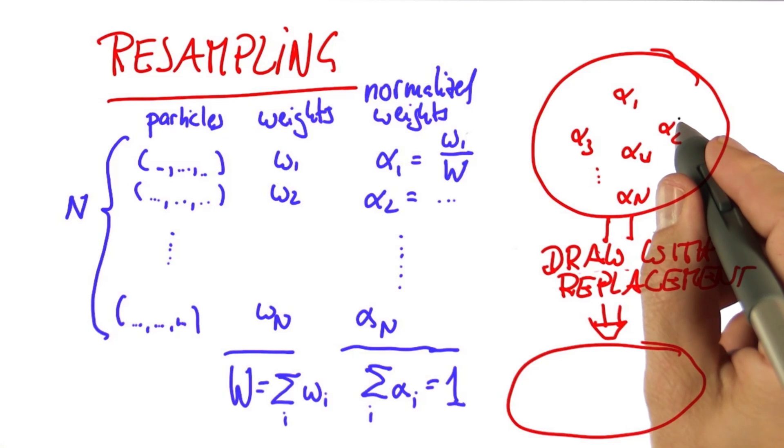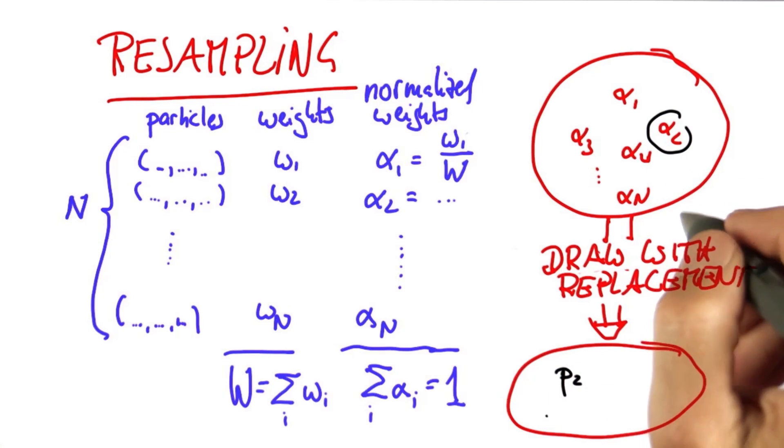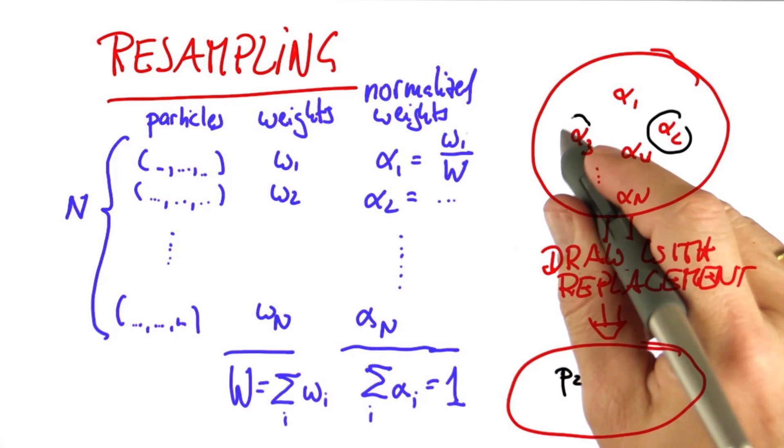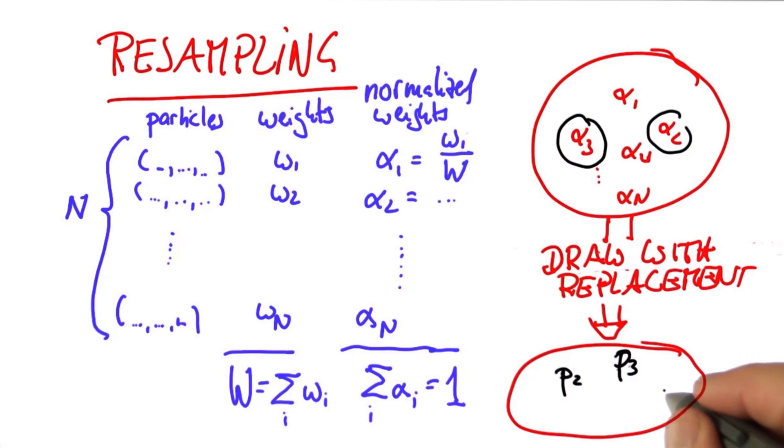So, for example, alpha 2 might be large, so we're going to pick this one, p2. Alpha 3 might also be large, we pick that one. Alpha 4 might be really small. Just by chance, we might actually pick it, so we have p4 over here. And then we might pick alpha 2 again. So you get two versions of p2, perhaps even three versions of p2, depending on the probabilities.